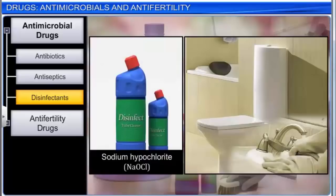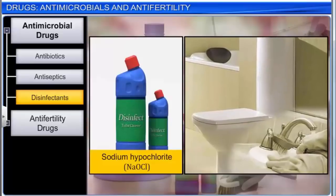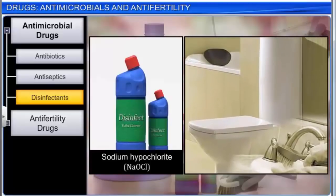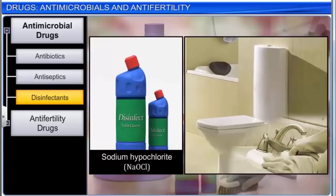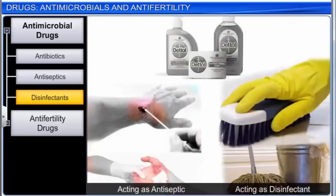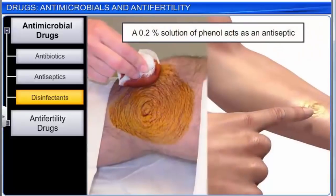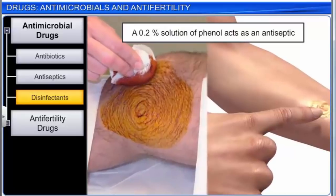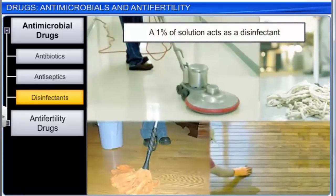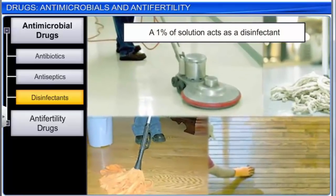A substance can act as an antiseptic as well as a disinfectant just by varying its concentration. For example, phenolics are active ingredients in some household disinfectants. A 0.2% solution of phenol acts as an antiseptic, while a 1% solution acts as a disinfectant and is used to clean floors.